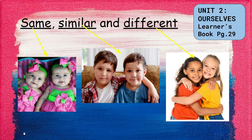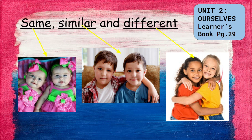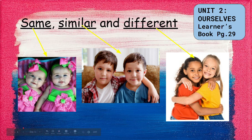How about the last picture? Are they the same, similar, or different? They are different. Look at their hair color — one is black and curly, and the other one is straight and blonde. Even the color of their skin is different — one is fair and one is brown. Now can you look at your partner and find something you have the same, something that is similar, and something that you are different?